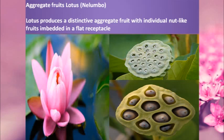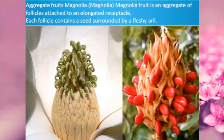Magnolia fruit is an aggregate of follicles — small follicles attached to an elongated receptacle. These red ones are your aggregates of follicles, and each follicle contains a seed surrounded by fleshy arils.